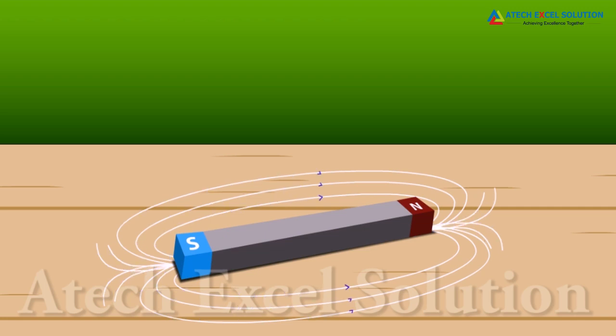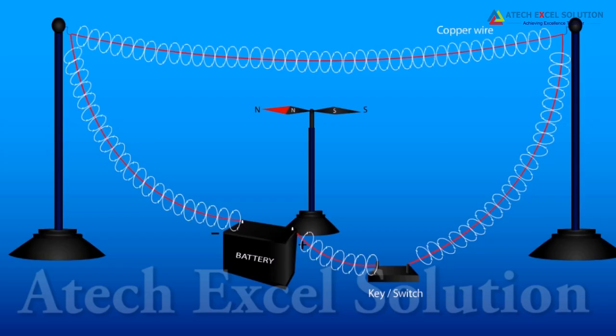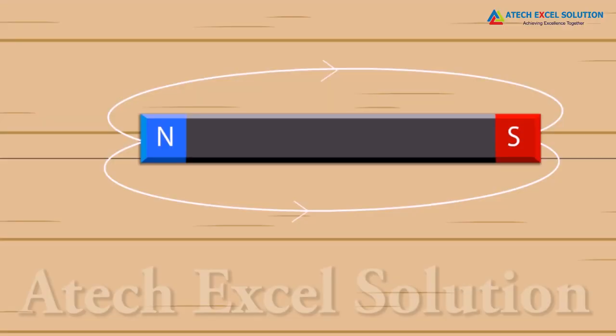Magnetic field is a quantity that has both direction and magnitude. The direction of magnetic field is the direction in which a north pole of the compass needle moves inside it. By convention, the field lines emerge from north pole and merge at south pole.